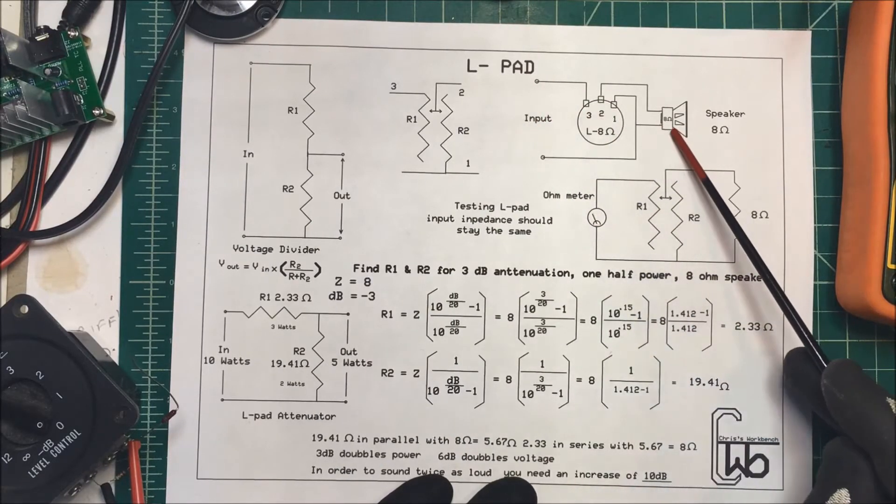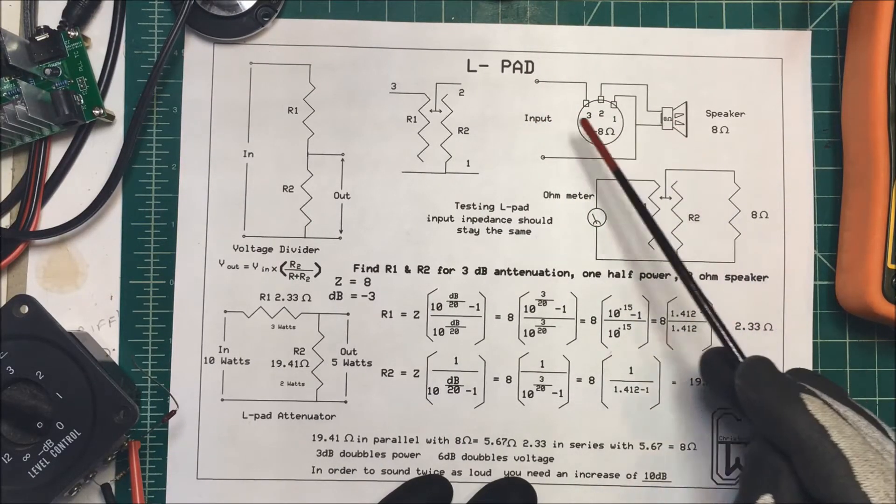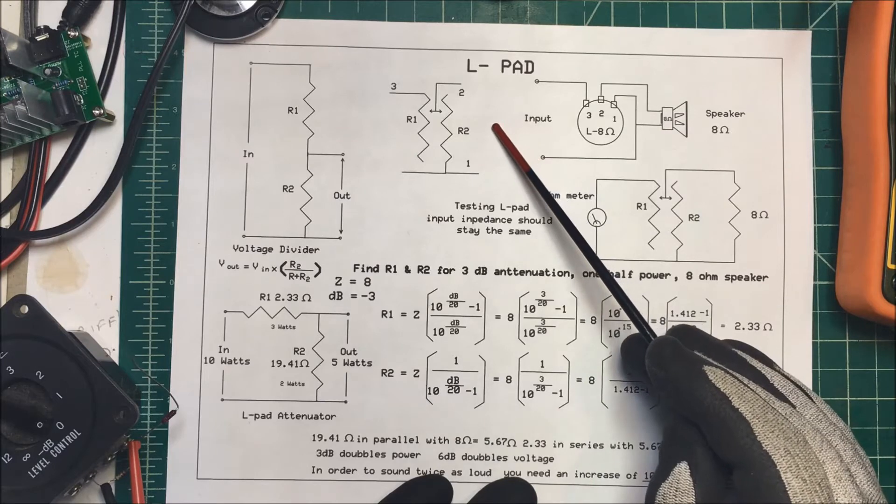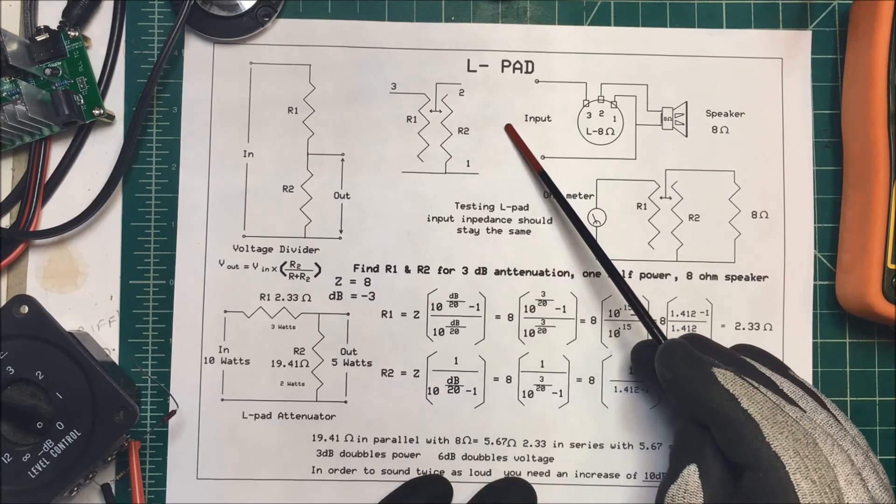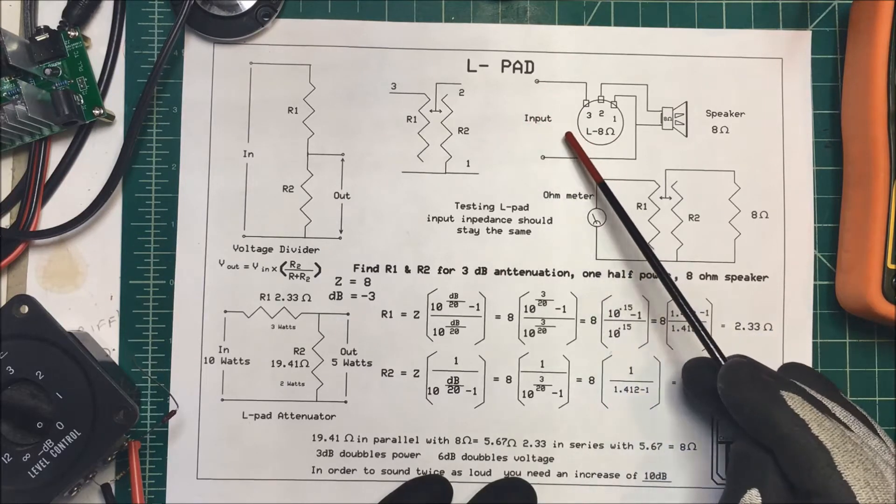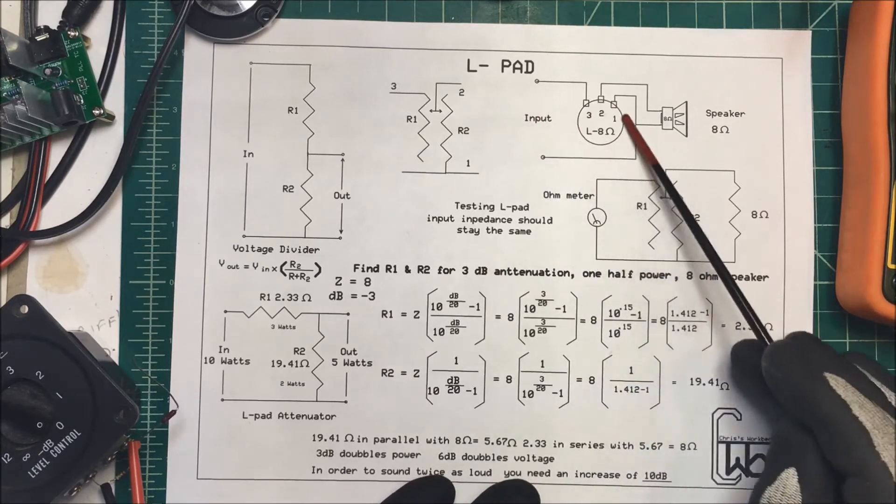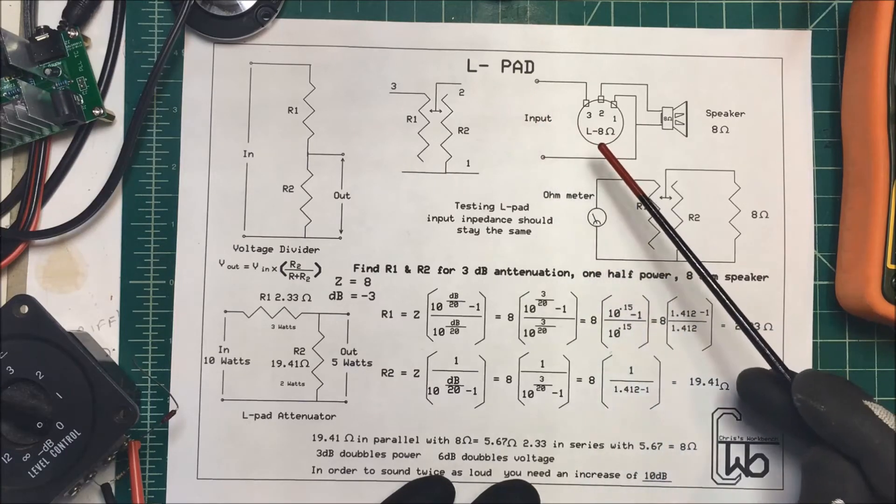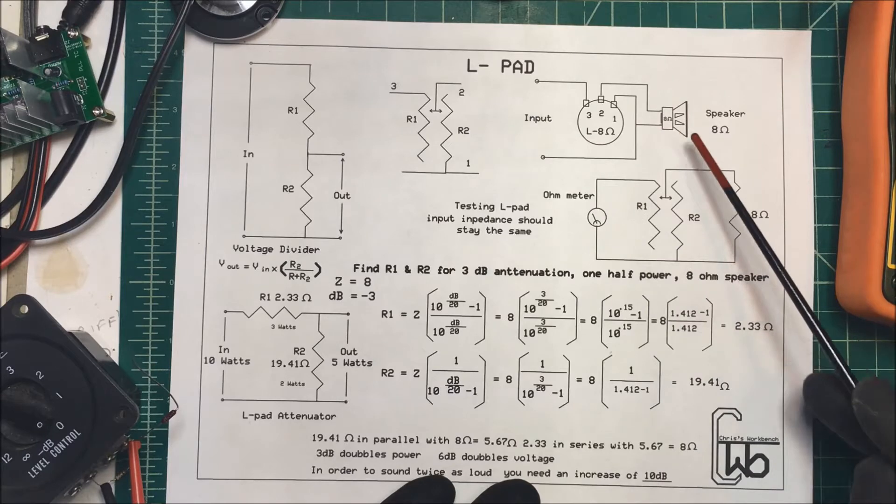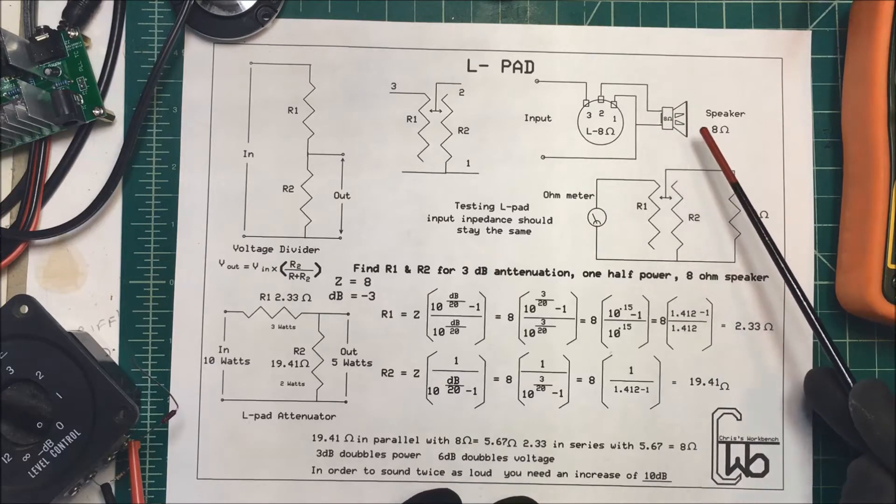Let's take a look at an L-pad. If you want to change the volume of the speaker, you need to keep the output of your amplifier the same impedance. If it wants to see 8 ohms, it has to see 8 ohms out there, can't see 4 or 16 ohms. So that's what an L-pad does - it maintains the impedance on your amplifier no matter where you have your volume on your speaker.